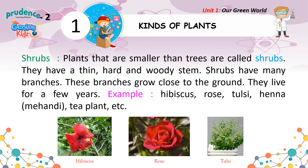Shrubs: Plants that are smaller than trees are called shrubs. They have a thin, hard and woody stem. Shrubs have many branches. These branches grow close to the ground. They live for a few years. Examples: Hibiscus, Tulsi, Henna, Mehendi, tea plant, etc.